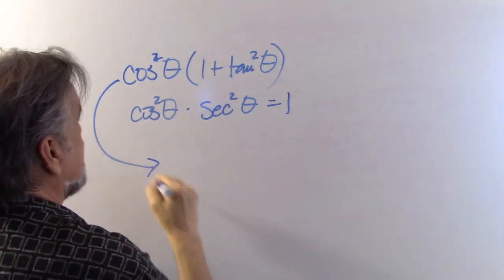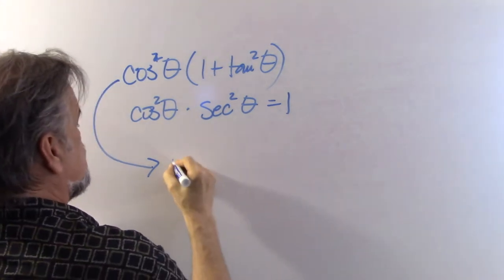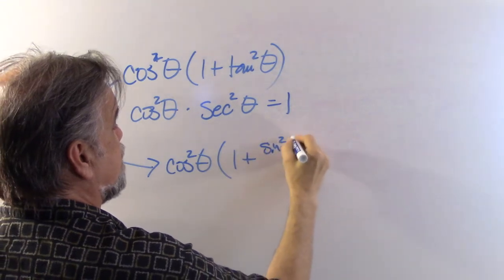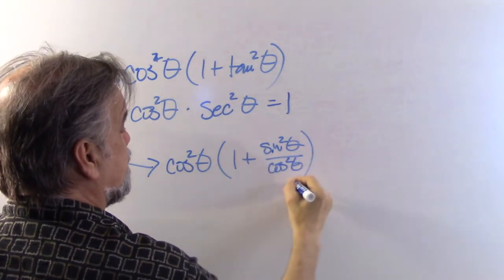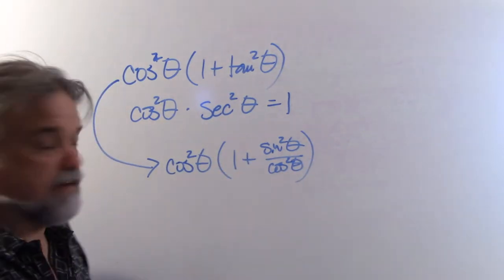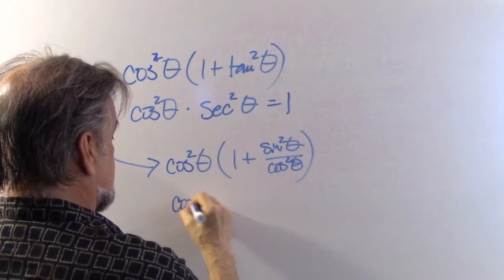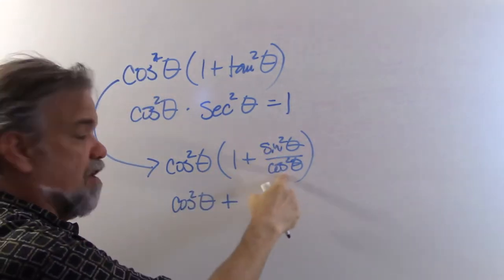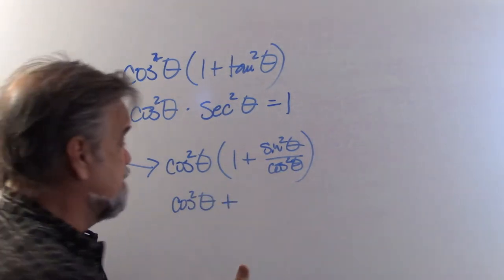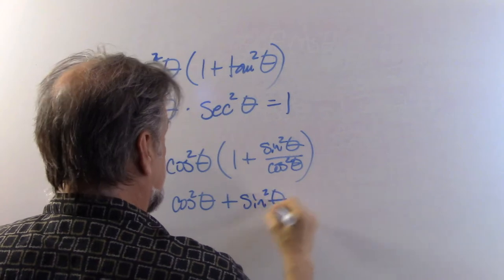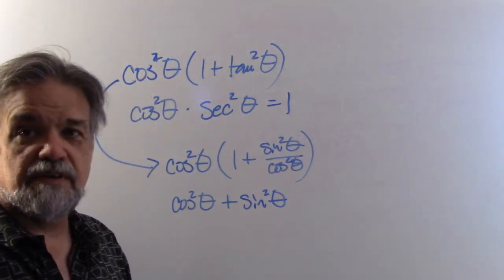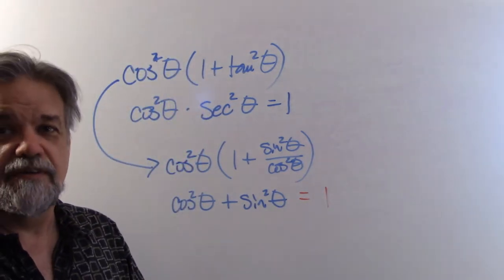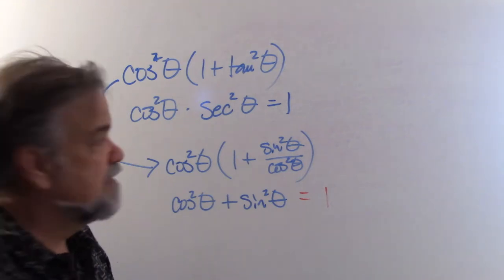Another way to solve number five: put everything in terms of sines and cosines. That gives cosine squared of theta times one plus sine squared of theta over cosine squared of theta. Distributing: cosine squared times one plus cosine squared times sine squared over cosine squared. The cosine squareds cancel, leaving cosine squared plus sine squared, which equals one. Either way, the answer is one.